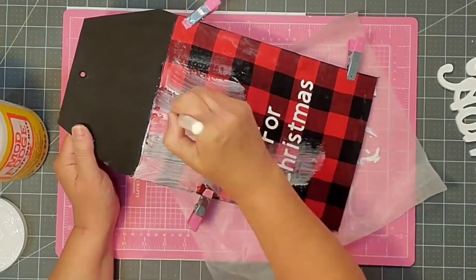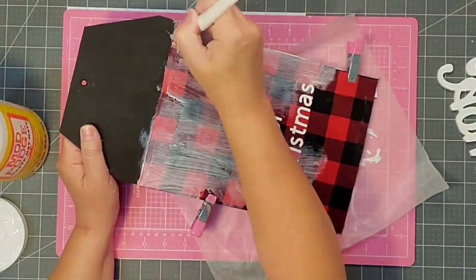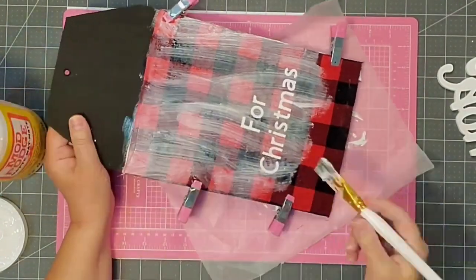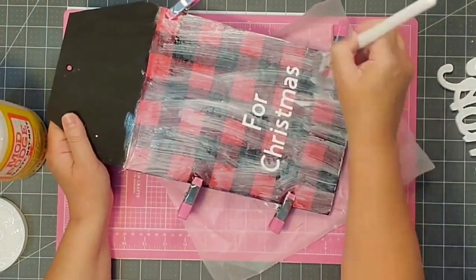I even used some little clips on the sides to make sure it stayed in place perfectly while it dried. And once it does dry, you're going to go in with a coat of Mod Podge on the top as well. And if you want to, you can go ahead and coat that black at the top.